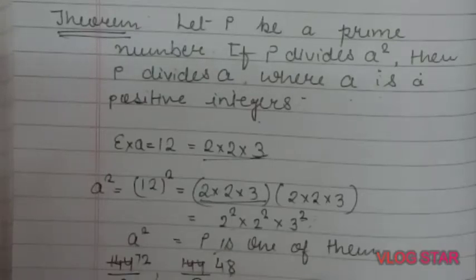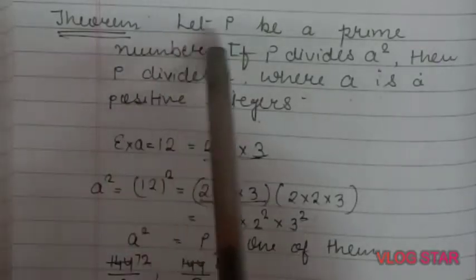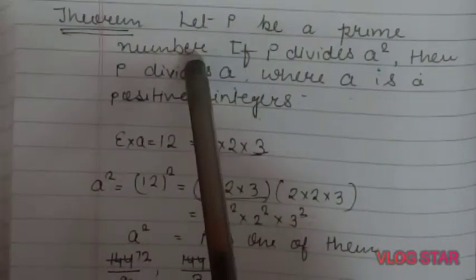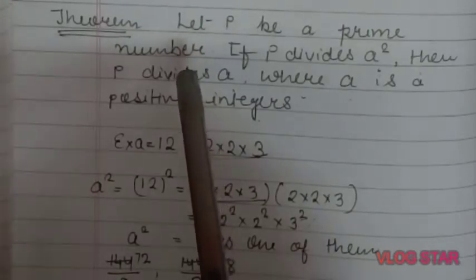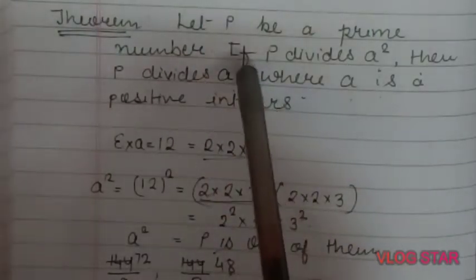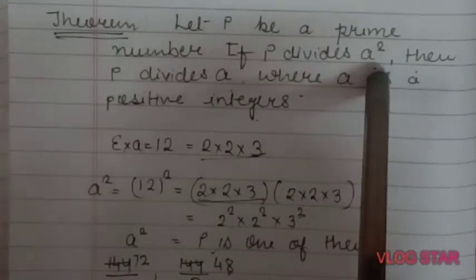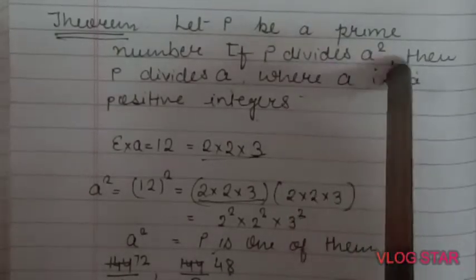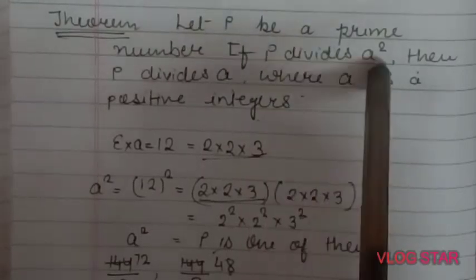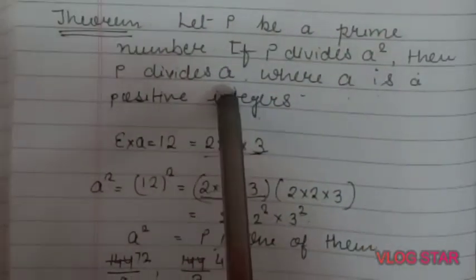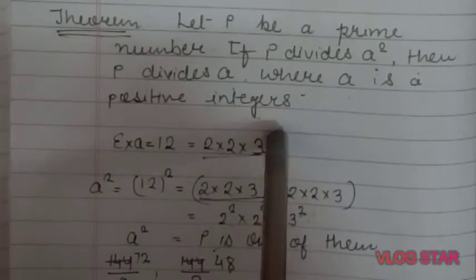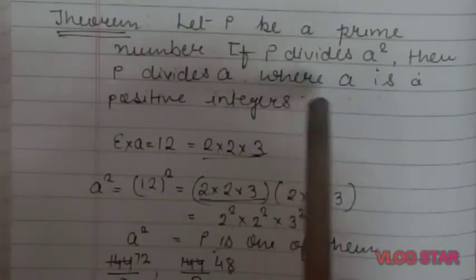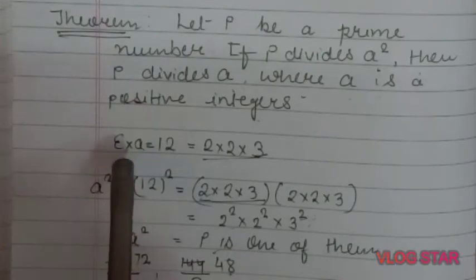I will explain Theorem 1.3 from Chapter 1: Real Numbers. Let p be a prime number. Prime numbers are those numbers which have exactly two factors — one and the number itself. The theorem states: if p divides a², then p divides a, where a is any positive integer.